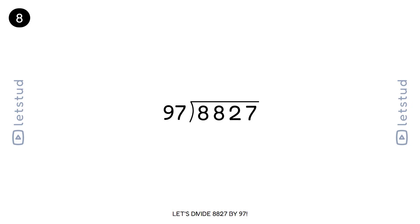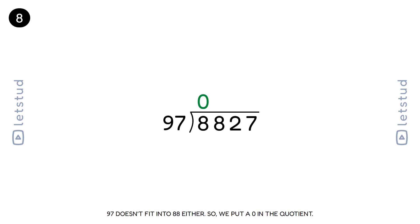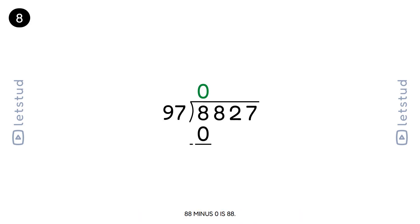Let's divide 8827 by 97. We start with the digit 8. 97 doesn't fit into 8, so we look at the first two digits, 88. 97 doesn't fit into 88 either, so we put a 0 in the quotient. 88 minus 0 is 88.